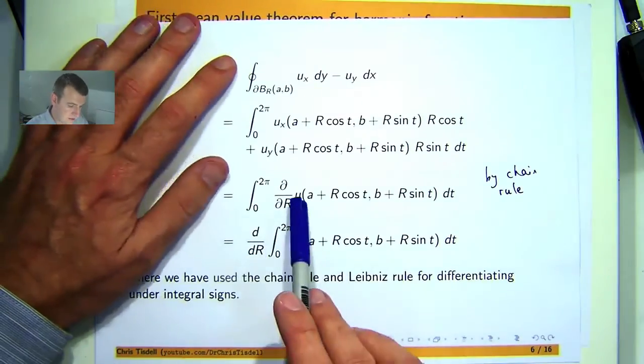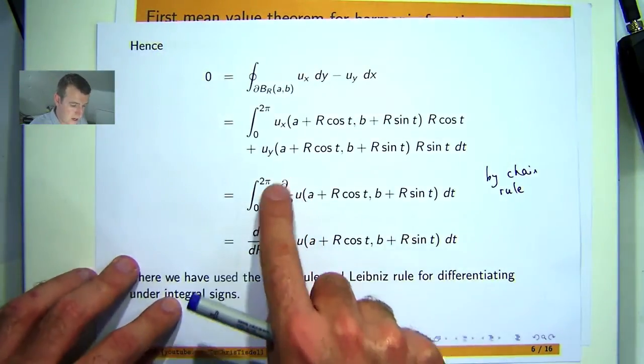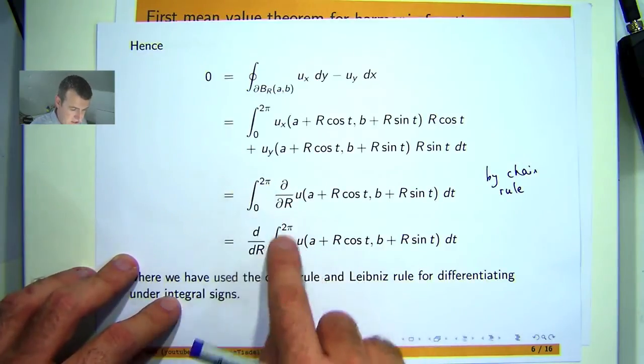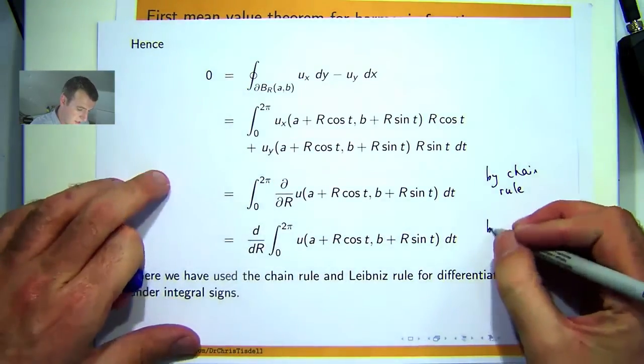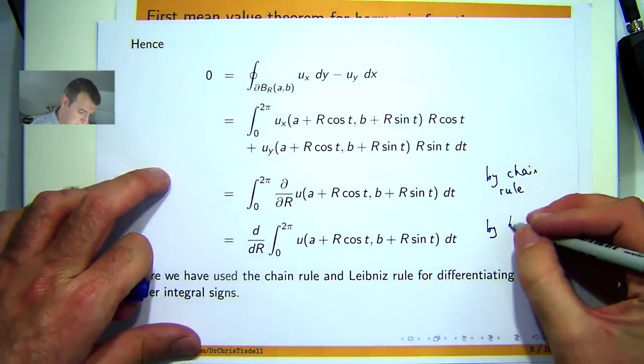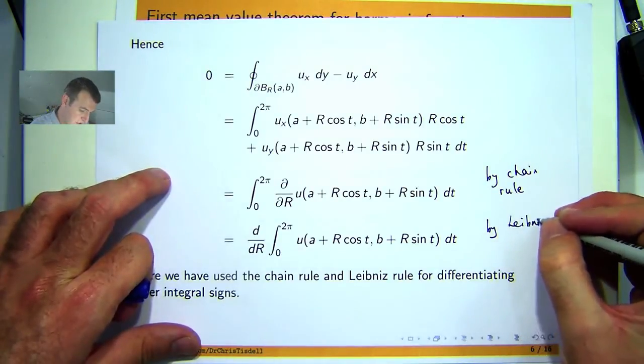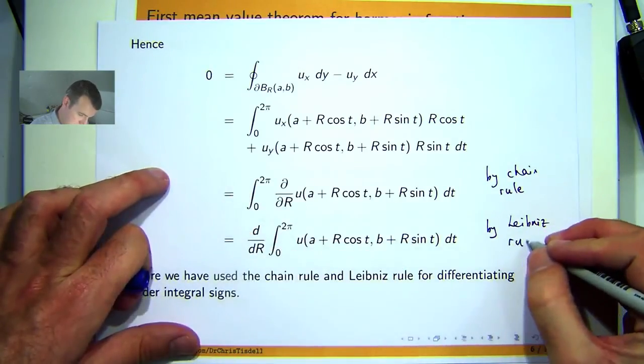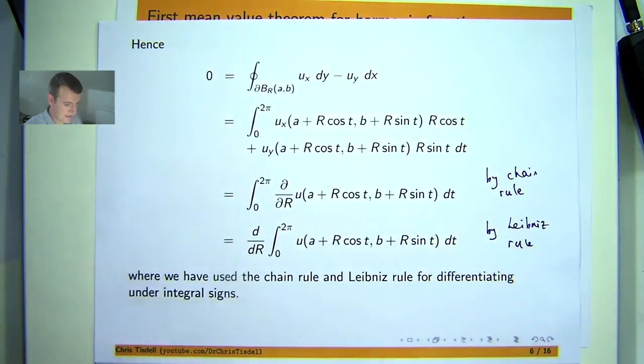Well, if I use now Leibniz rule, I can take this d dr out the front and change the curly d's to straight d's. Again, I've got lots of videos on Leibniz rule. Usually you sort of go the other way, from here to here, but here we're going the opposite way. So, I know that the derivative of this is zero.